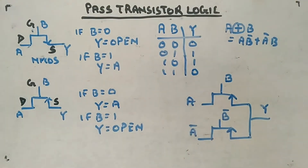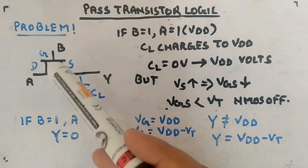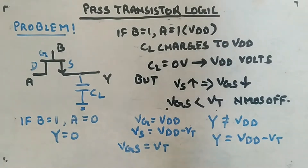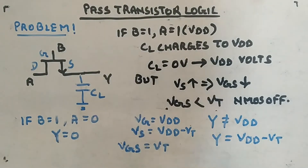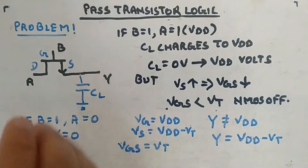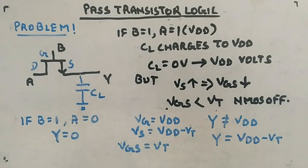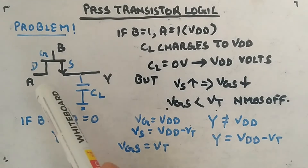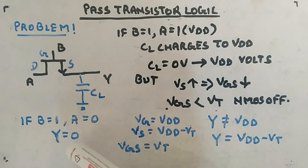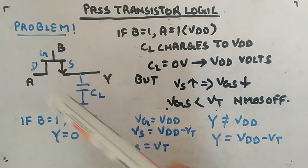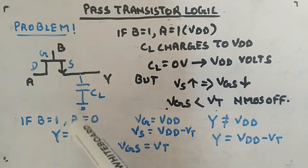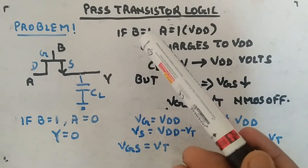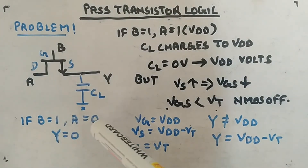However, pass transistor logic has a problem. Taking the NMOS example: drain, gate, source — B is controlling, A is input, Y is output, driving a capacitive load CL. When B is 1, Y should equal A. If A is 0, Y is 0 — it passes logic low successfully. But now consider when A is 1 (VDD) and B is also 1.